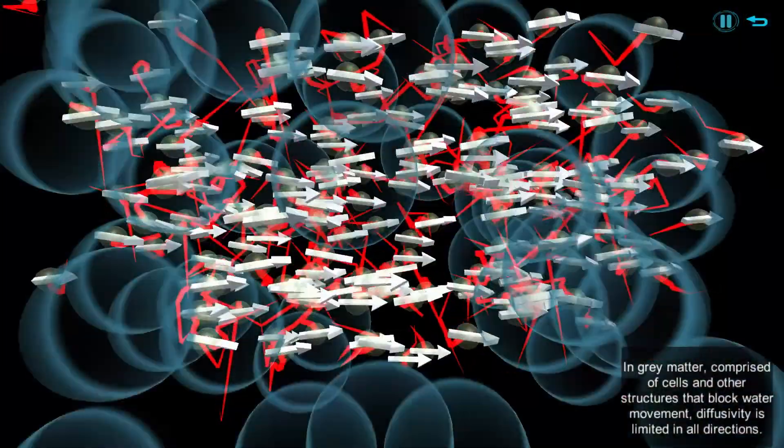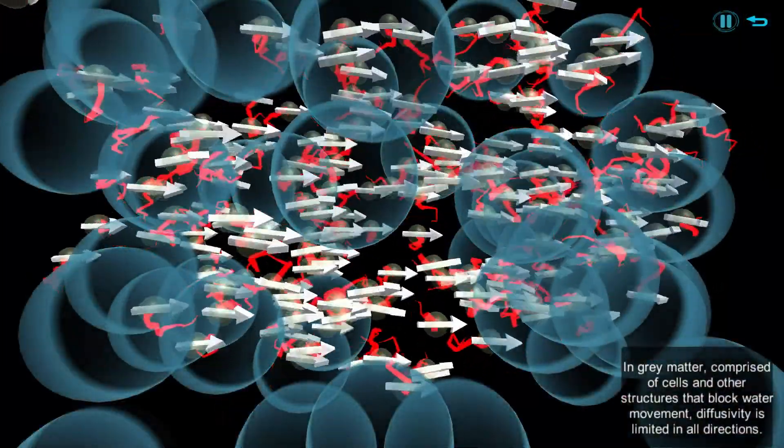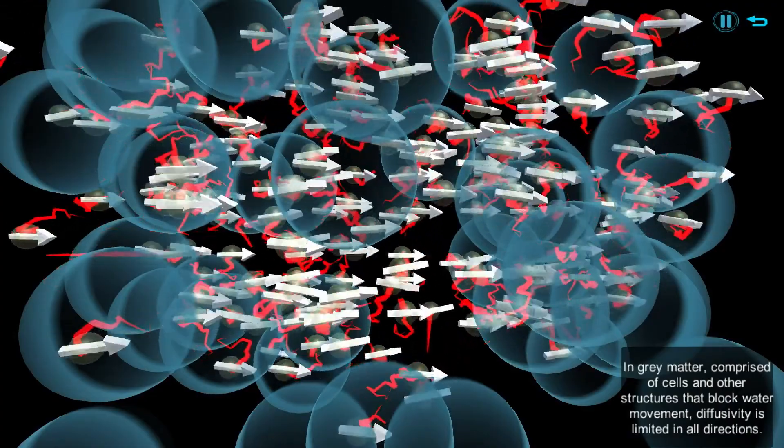In gray matter, comprised of cells and other structures that block water movement, diffusivity is limited in all directions.